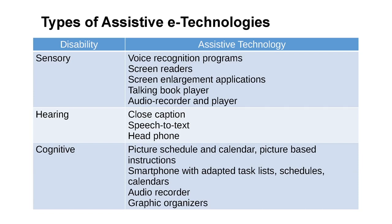There are different types of assistive e-technologies depending on the disability. For people with sensory disabilities, we have voice recognition programs, screen readers, screen enlargement applications, talking book players, and audio recorder and players. For those with hearing problems, we have closed caption, speech to text, and headphones. For cognitive disabilities, we have picture schedules and calendars, picture-based instructions, smartphones with adopted task lists, schedules, calendars, audio recorders, and graphic organizers.